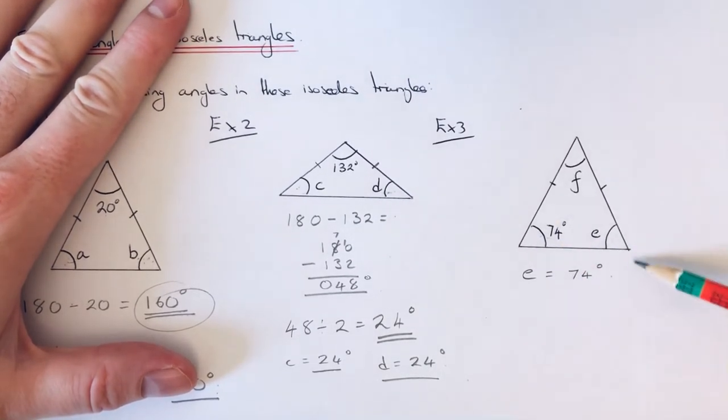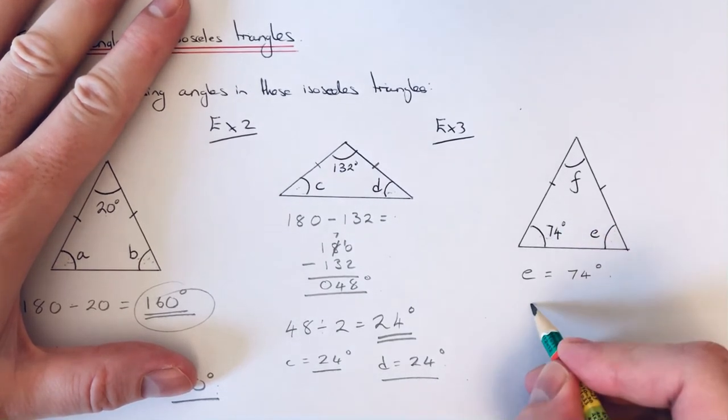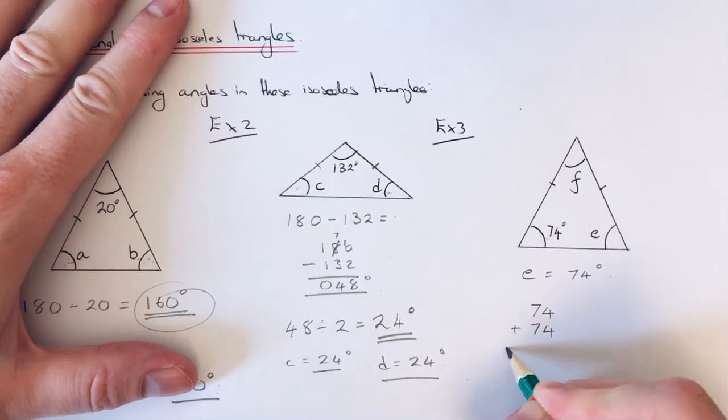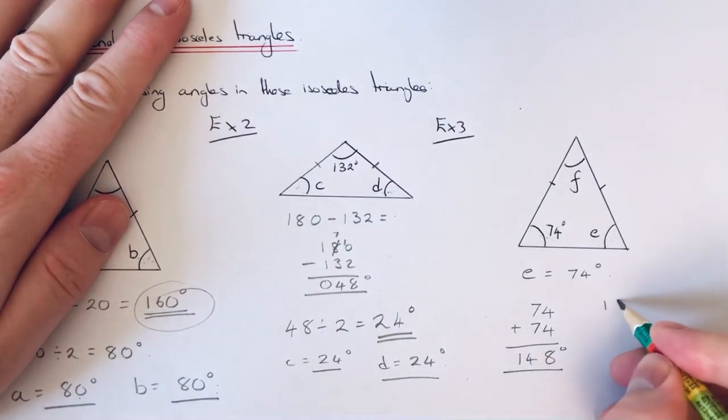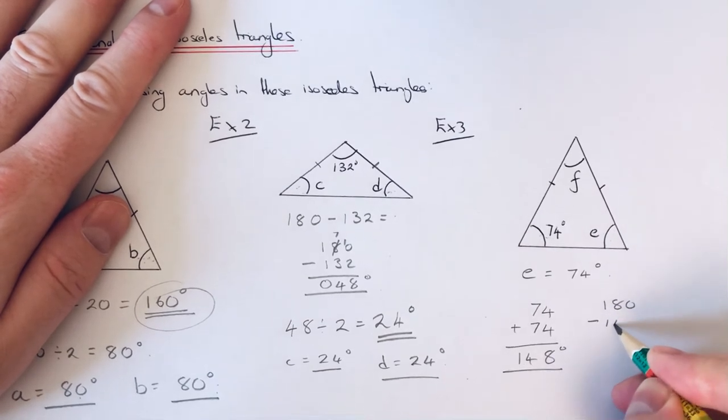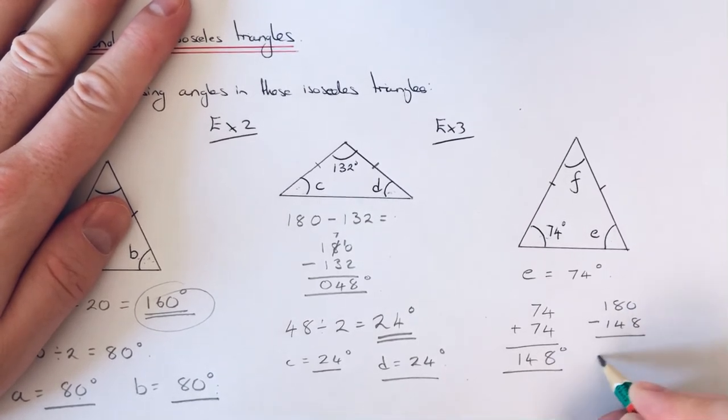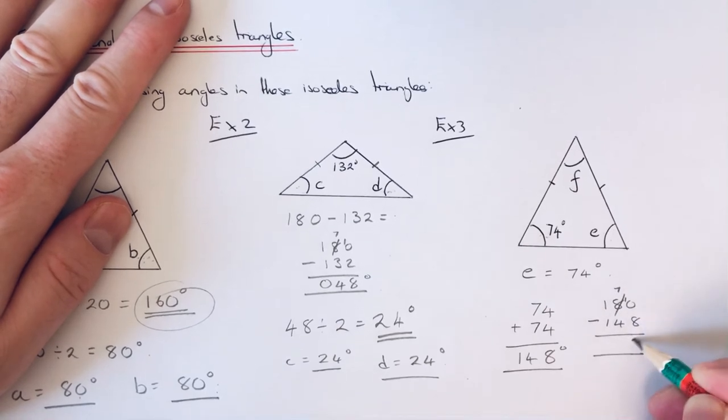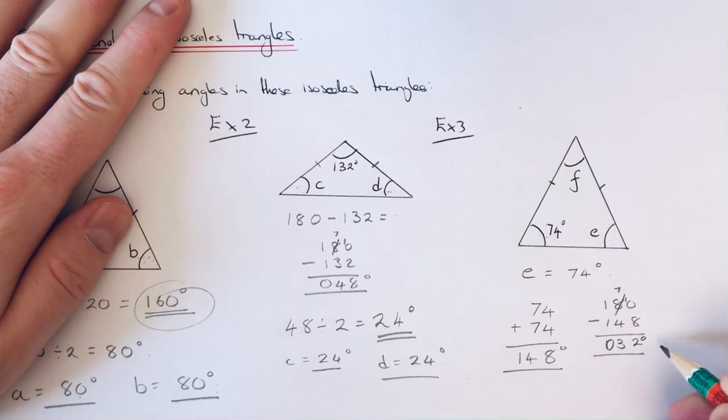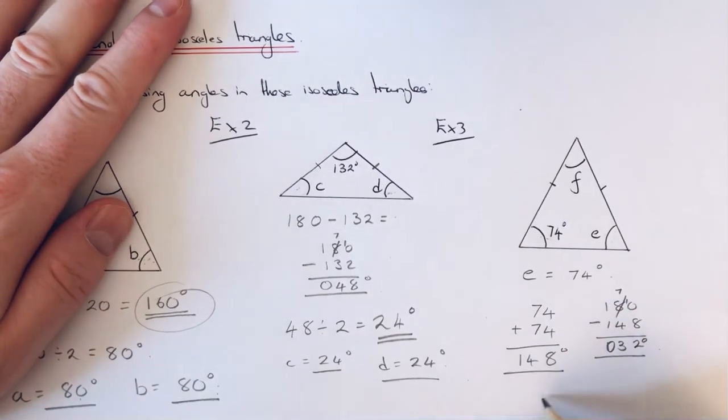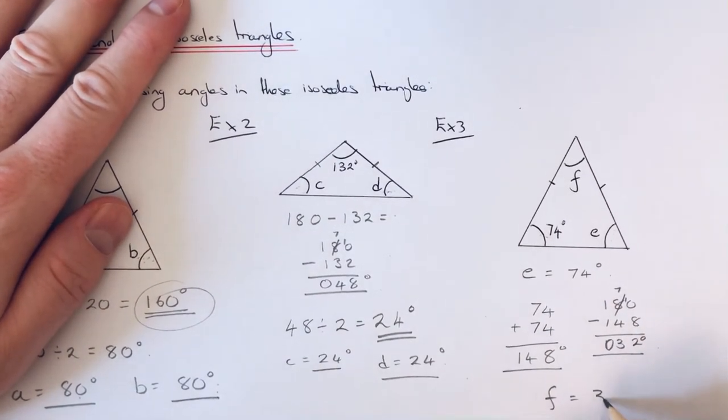Again, we know angles in a triangle add to 180. So if we add these two up at the bottom, that gives us 148 degrees. Then subtract this away from 180, and that gives us an answer of 32 degrees. So that is angle F.